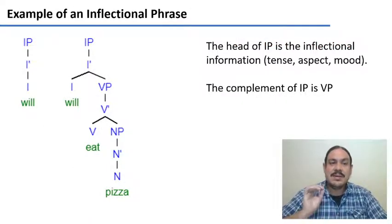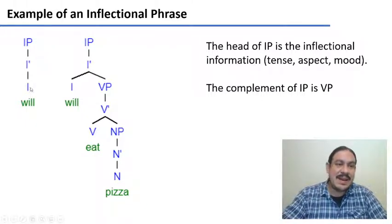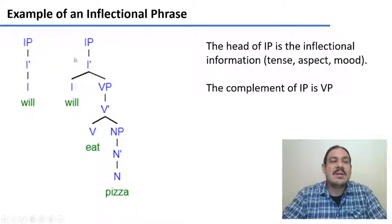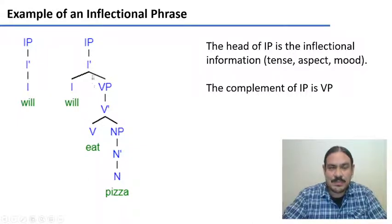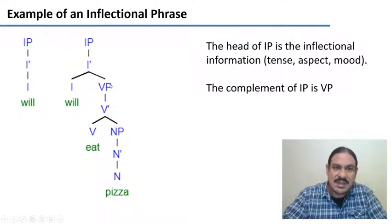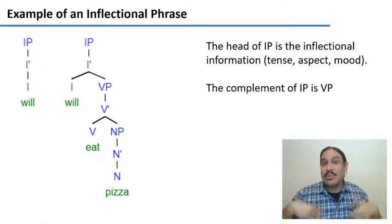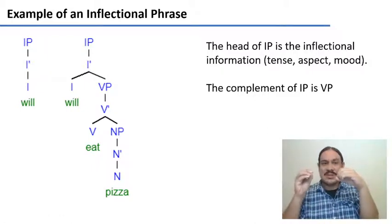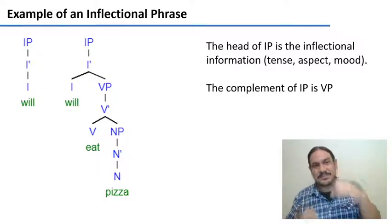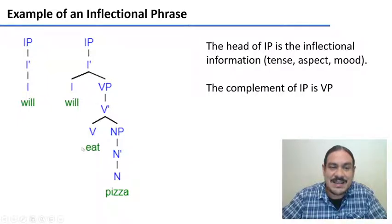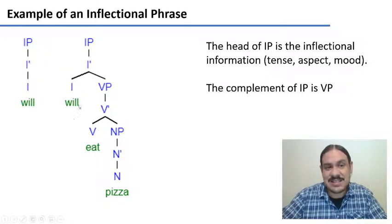An inflectional phrase has as its head an inflectional word like 'will,' because this indicates the future tense. It has an X-bar, and onto that X-bar we will have as a complement a verb phrase. So this inflectional phrase has 'will' as its head and then as its complement 'eat pizza.' This is the complement because it's what helps the word 'will' make sense — you can't just say 'will.' You need a complement for it to be a complete phrase. Notice that these two now form a set that has a verb, a direct object, and inflectional information about the tense of the verb.